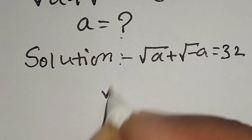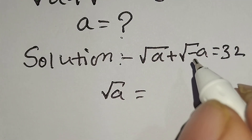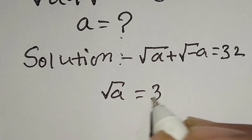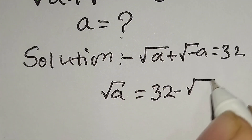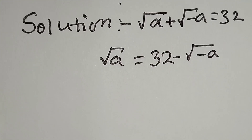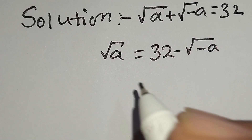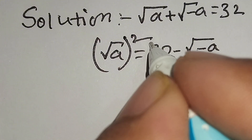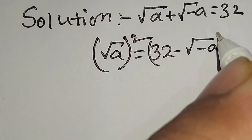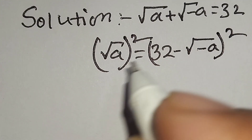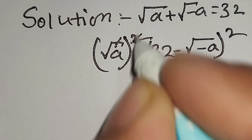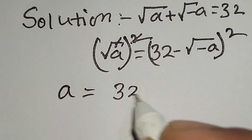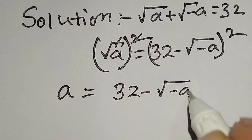Here we take square root of a on the left side and move square root of negative a to the right side, so we can write: square root of a equals 32 minus square root of negative a. Now we will square both sides: square root of a whole square equals 32 minus square root of negative a whole square. This square root and square cancel out, giving a equals 32 minus square root of negative a whole square.